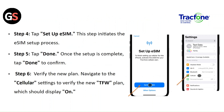Step 4: tap on Set Up My eSIM. This step initiates the eSIM setup process. Step 5: tap Done once the setup is complete, then tap Done again to confirm. Step 6: verify the new plan. Navigate to the cellular settings to verify the new TFW plan, which should be displayed.